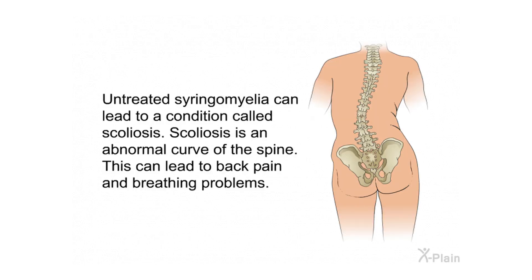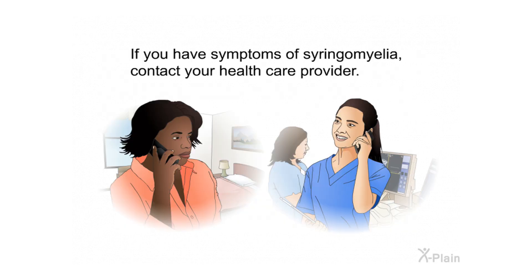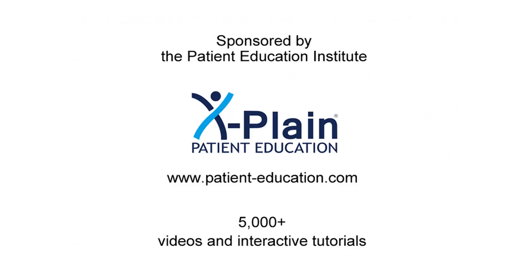Untreated syringomyelia can lead to scoliosis, an abnormal curve of the spine, which can cause back pain and breathing problems. It can also cause Horner syndrome, a disorder affecting nerves in the face that can cause drooping eyelids and loss of the ability to sweat normally. If you have symptoms of syringomyelia, contact your health care provider.